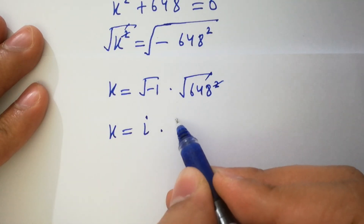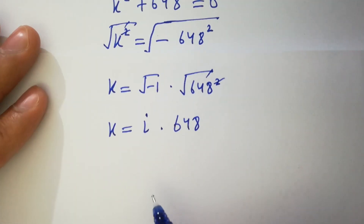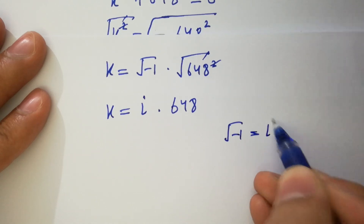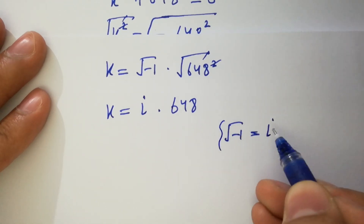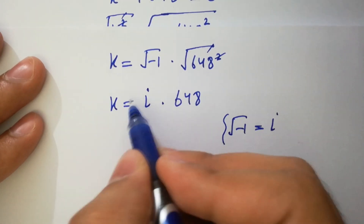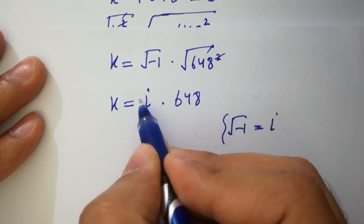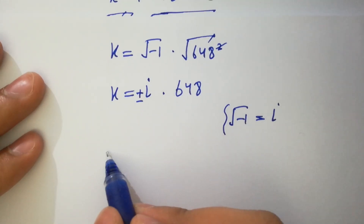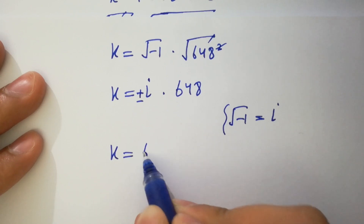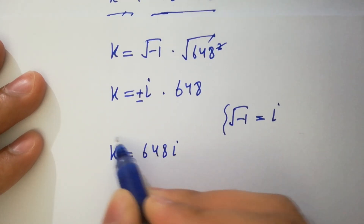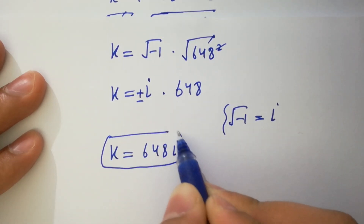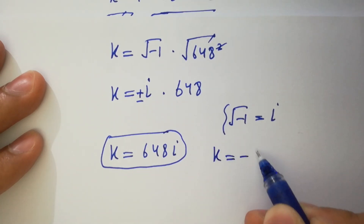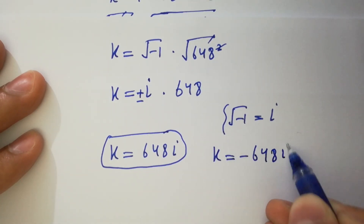Since square root of minus 1 equals i, and the square cancels from square root giving 648, with plus or minus, we have finally k equal to 648i and also k equal to minus 648i.